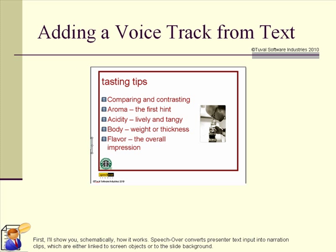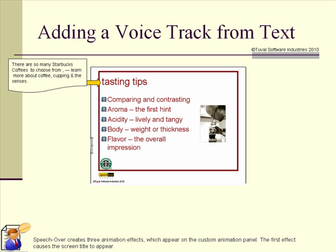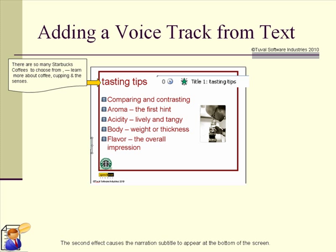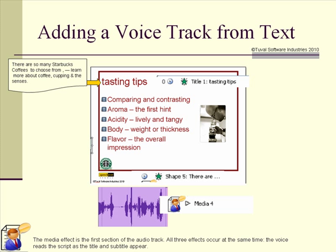First, I'll show you schematically how it works. SpeechOver converts presenter text input into narration clips, which are either linked to screen objects or to the slide background. SpeechOver inputs the presenter's text and links it with the title. SpeechOver creates three animation effects, which appear on the custom animation panel. The first effect causes the screen title to appear. The second effect causes the narration subtitle to appear at the bottom of the screen. The third effect is a sound media effect — the voice narration — produced by a text-to-speech voice reading the text. The media effect is the first section of the audio track. All three effects occur at the same time.